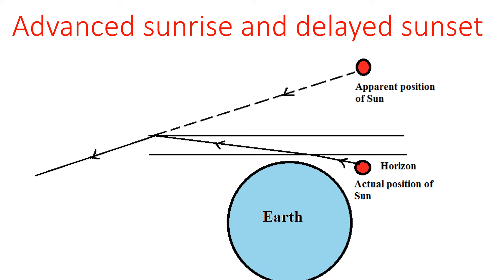What happens at the time of sunrise and sunset? The position of the sun is at the horizon or beyond the horizon. The light coming from the sun gets refracted several times due to atmospheric refraction, and ultimately reflects in the same medium due to total internal reflection. That is why the apparent position of the sun is seen above the horizon, and thus we are able to see the sun before actual sunrise and after actual sunset. This is advanced sunrise and delayed sunset.